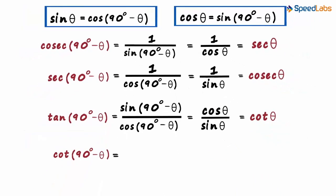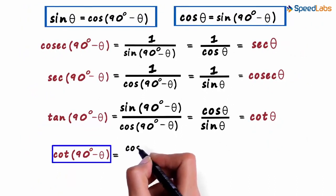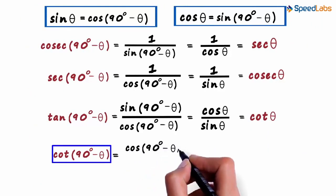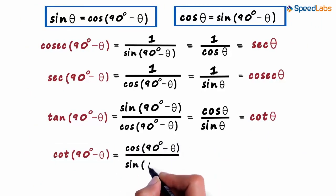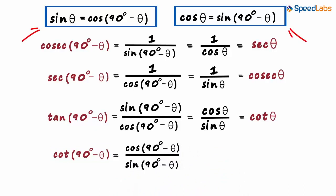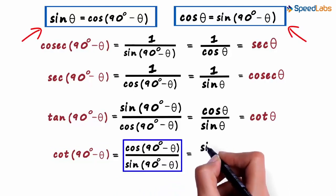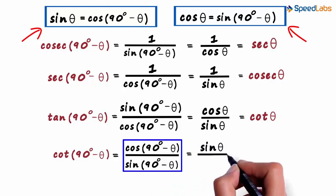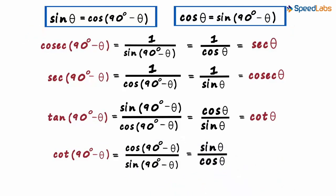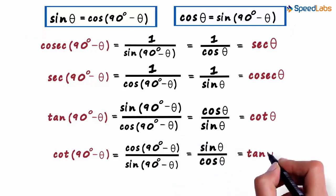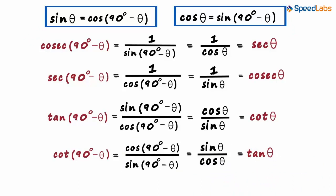Now we look at the last special relation of complementary angles. Cot(90° - θ) can be written as cos(90° - θ) divided by sin(90° - θ). From the two relations above, this ratio can be written as sin θ by cos θ, which equals tan θ. This tells us that the tangent of any angle equals the cotangent of its complementary angle.